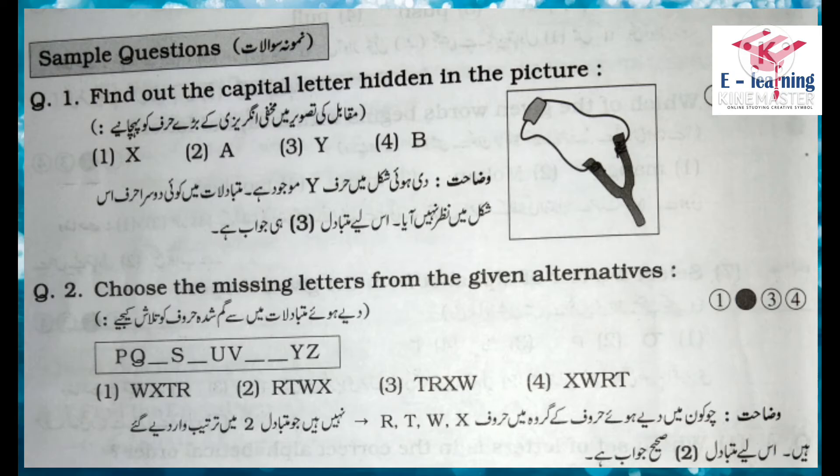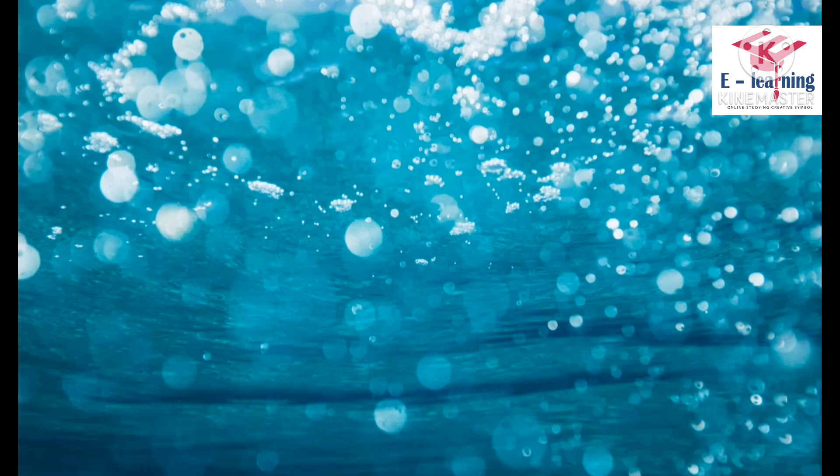Question number 2: Choose the missing letter from the given alternatives. دیے ہوئے متبادلات میں سے گمشدہ حروف کو تلاش کیجیے۔ Series: P, Q, -, S, -, U, V, -, Y, Z. Explanation: چوکون میں دیے گئے حروف کے گروہ میں حروف R, T, W, X نہیں ہیں جو متبادلات میں ترتیب وار دیے گئے ہیں، اس لیے متبادل دو سہی جواب ہے۔